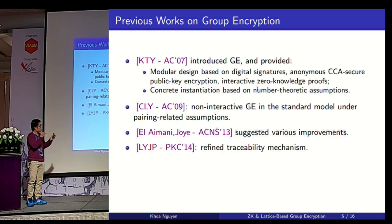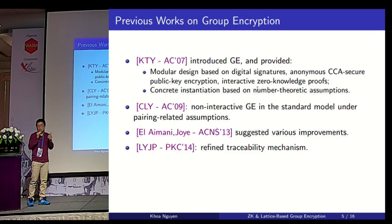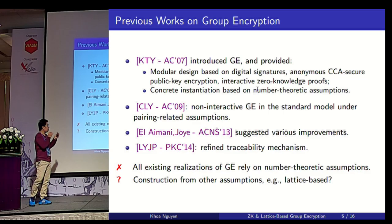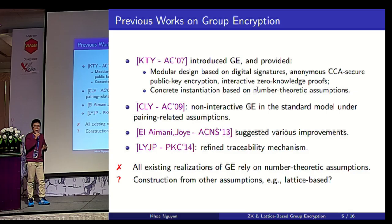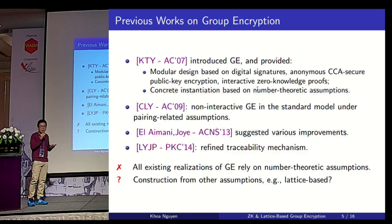Subsequently, Libert et al. proposed a refined traceability mechanism that allowed identifying the ciphertext intended for specific group members without affecting the anonymity of all other members. For the time being, all existing realizations of group encryption rely on traditional number-theoretic assumptions. Since we don't want to put all of our eggs in the same basket, it may be worth considering constructions from other assumptions, like lattice-based. Lattice-based crypto is interesting because lattice assumptions still resist quantum computers.